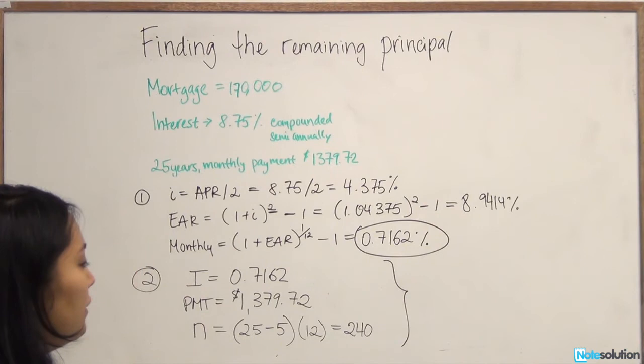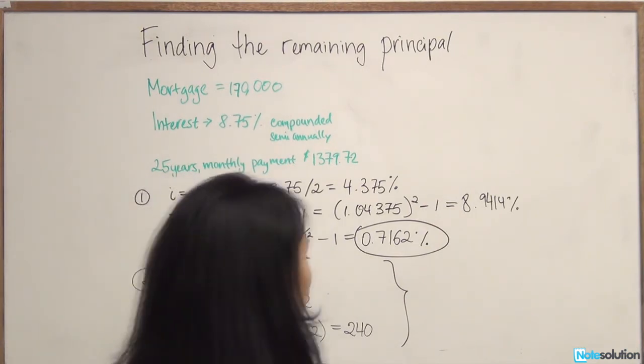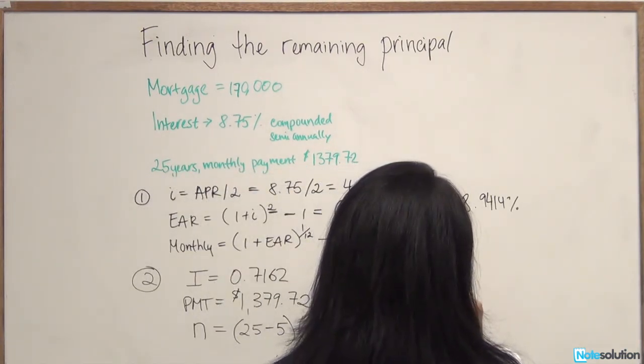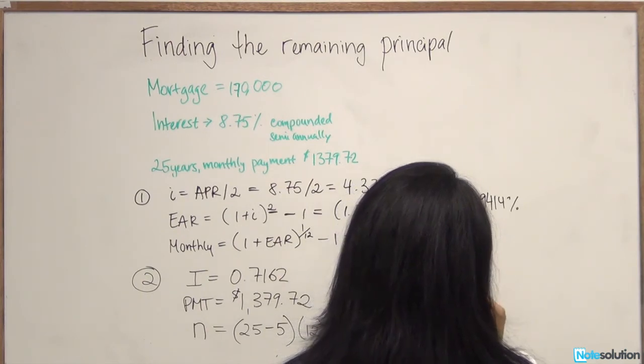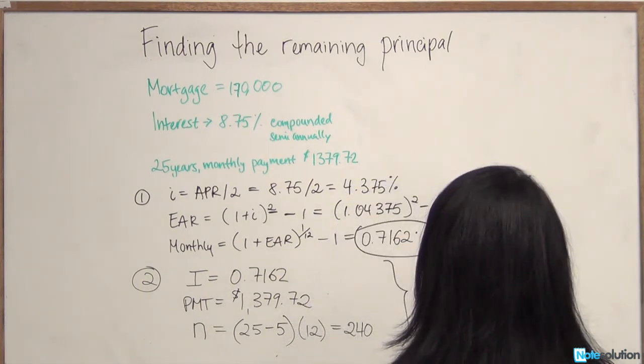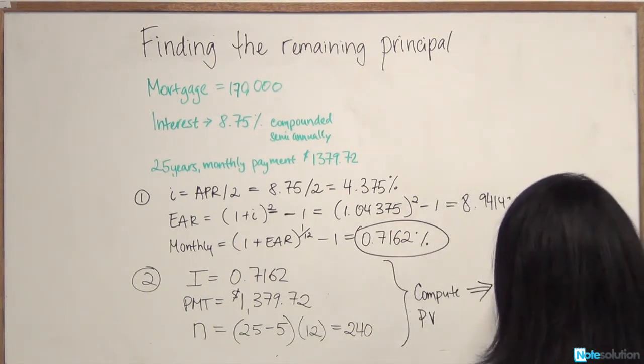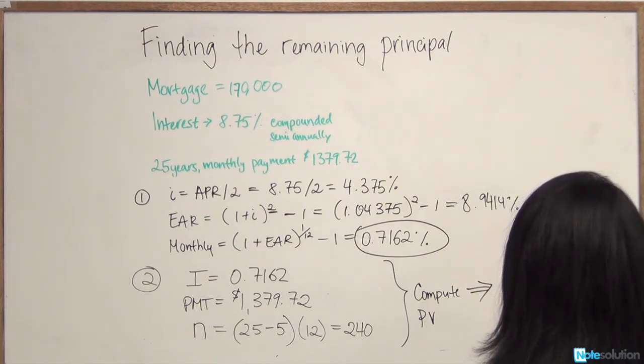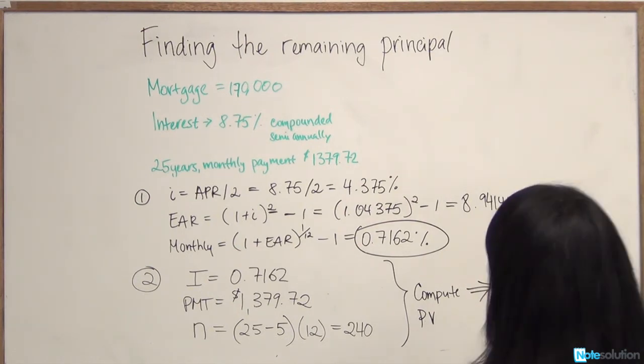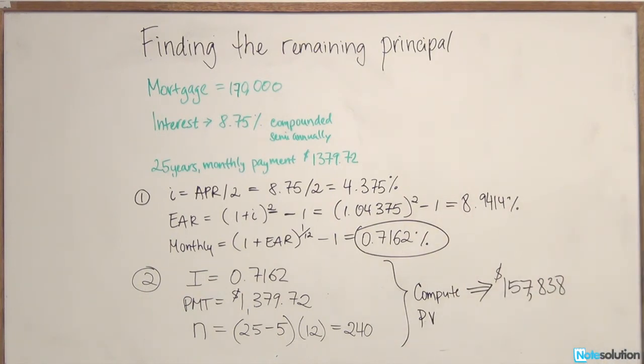Once you've entered all this information, you can compute present value. You should get $157,838. So after five years of paying a mortgage of $1,379 per month, the remaining balance on your mortgage is $157,838.